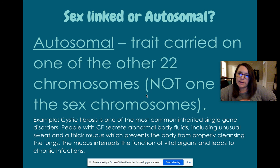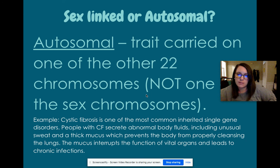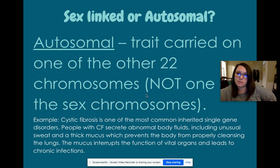Autosomal just means it's not carried on the sex chromosomes — it's carried on the other 22 pairs. An example of an autosomal disorder is cystic fibrosis, one of the most common inherited single-gene disorders. People with cystic fibrosis secrete abnormal body fluids, including unusual sweat and thick mucus, which prevents the body from properly cleansing the lungs. The mucus interrupts the function of vital organs and leads to chronic infections. There's actually a movie about cystic fibrosis — I think it's called Five Feet Apart. Go watch it.